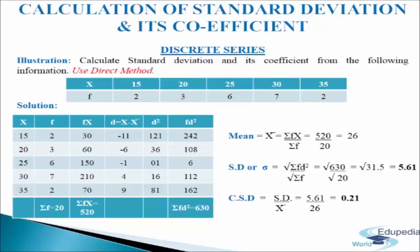So now SD, that is standard deviation, equals the square root of sigma fd square divided by sigma f. Putting in the values, we get 5.61 as standard deviation. Now CSD, the coefficient of standard deviation, equals SD divided by mean. SD is 5.61 and mean is 26, so 5.61 divided by 26 gives 0.21 as CSD. This is how we calculate standard deviation using the direct method.